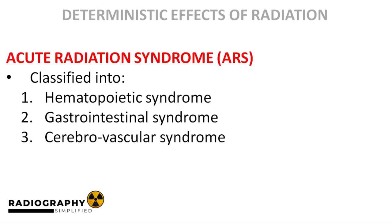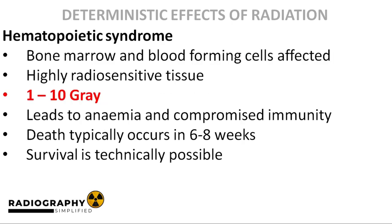Now let's look into the features of acute radiation syndrome. Take note that ARS is not a symptom on its own, but is rather a collection of symptoms. Acute radiation syndrome can be classified into three sub-syndromes depending on the dose received by the victim. The hematopoietic system consists of the bone marrow and blood-forming cells. It is a very radiosensitive system. The hematopoietic sub-syndrome occurs when a person receives a 1 to 10 gray whole-body dose of ionizing radiation.